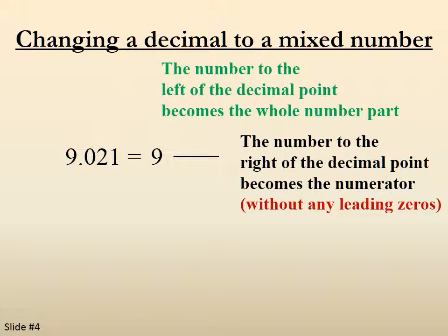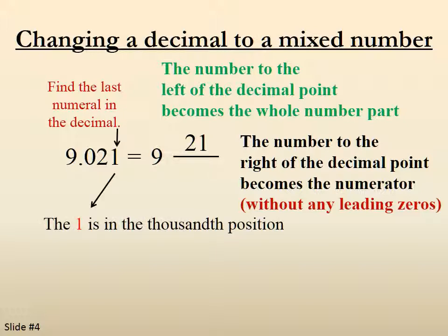The number to the right of the decimal point becomes the numerator, without any leading zeros. So 21. We find that last numeral in the decimal, which is the 1. The 1 is in the thousandth position. So we put a thousand in the denominator. So 9.021 becomes 9 and 21 thousandths.